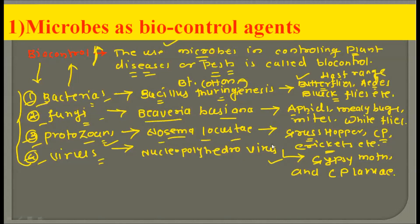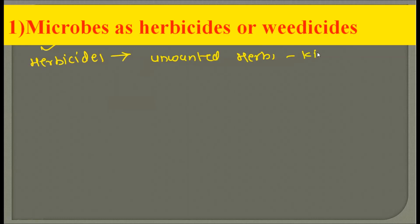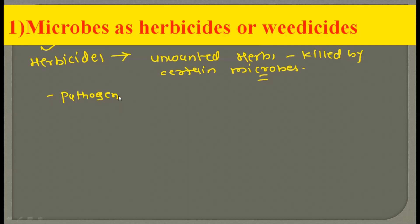Now let's move to the second application of microbiology in agriculture. Microbes can be used as herbicides or weedicides. Herbicides means that certain microbes kill unwanted herbs. The microbes used as herbicides are pathogenic fungi called mycoherbicides.